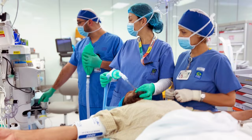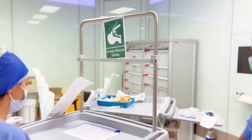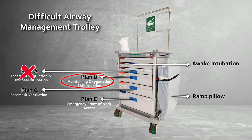If Plan A failed, proceed to Plan B. It's also crucial to bring the difficult airway management trolley inside. A difficult airway management trolley is a specialized equipment cart designed to assist anesthetists in managing challenging airway situations. It contains various tools and devices specifically tailored to address difficulties encountered during intubation and airway management. Now that Plan A has failed, let's switch to Plan B: maintaining oxygenation using a supraglottic airway device.